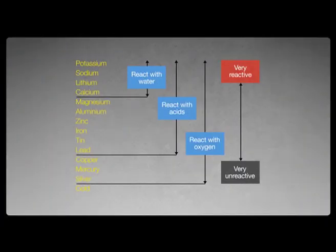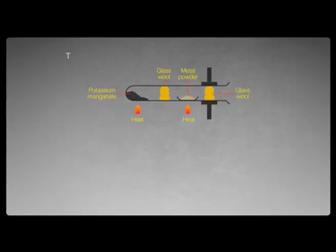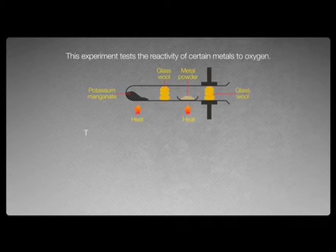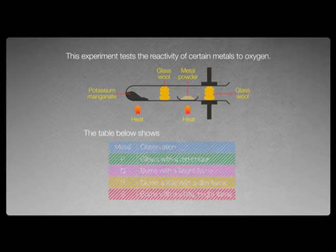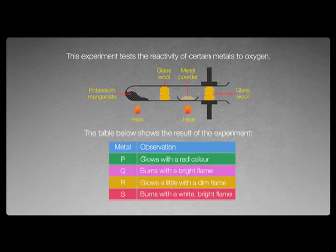This table shows metals in the order of reactivity. As you can see, potassium is the most reactive, while gold is the least reactive. Let's take a look at this experiment and answer the following questions. This experiment tests the reactivity of certain metals with oxygen. The table below shows the result of the experiment.